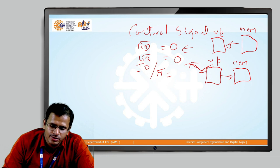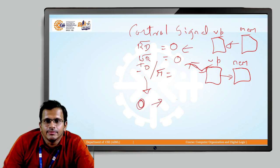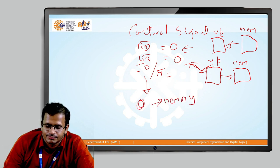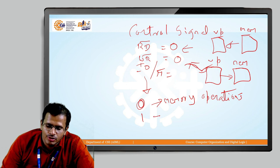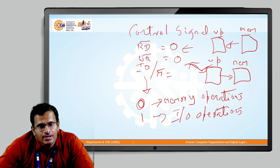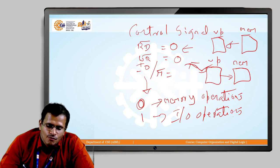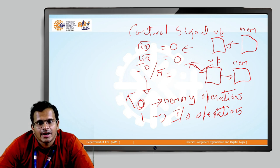The third control line is IO/M bar. When the value of IO/M bar is 0, it will operate with memory operations. When the value of IO/M bar is 1, it goes on to input/output operations. We will now understand each operation: we will look at IO/M bar as 0, then examine the Read bar and Write bar operations.